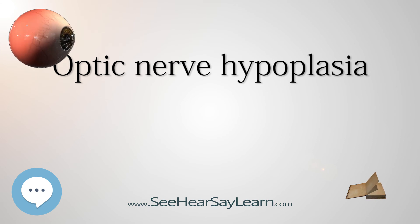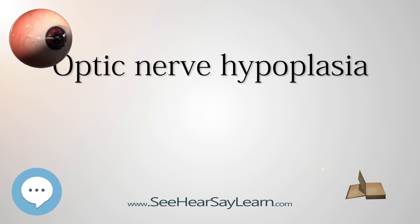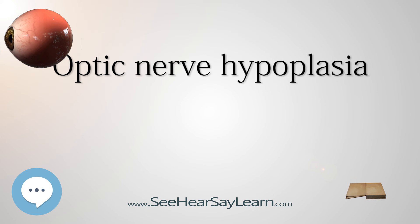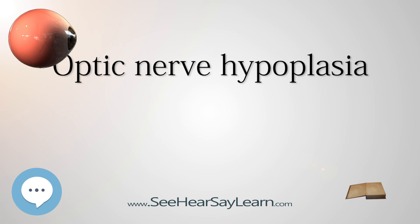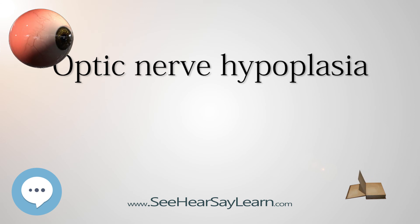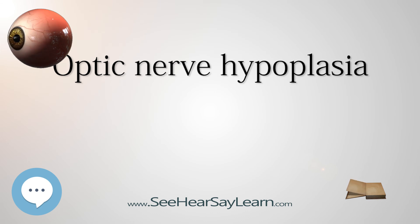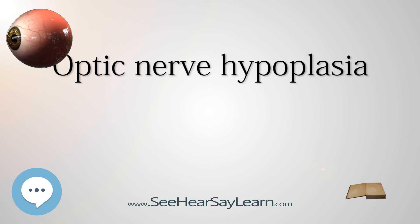The incidence of ONH is increasing, although it is difficult to estimate the true prevalence. Between 1980 and 1999, the occurrence of ONH in Sweden increased fourfold to 7.2 per 100,000, while all other causes of childhood blindness had declined. In 1997, ONH overtook retinopathy of prematurity as the single leading cause of infant blindness in Sweden, with 6.3 in every 100,000 births diagnosed with ONH. The most recent prevalence report out of England in 2006 is 10.9 per 100,000.